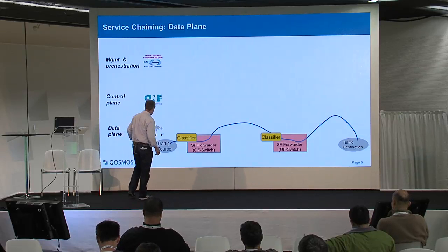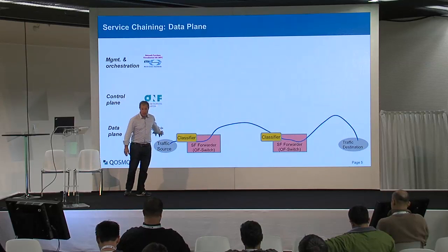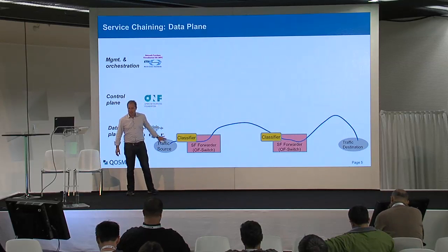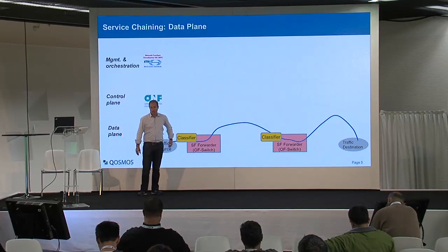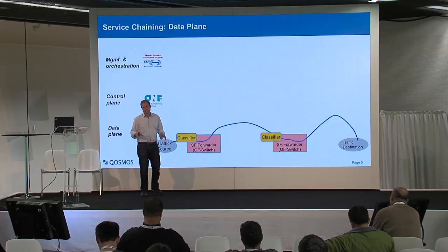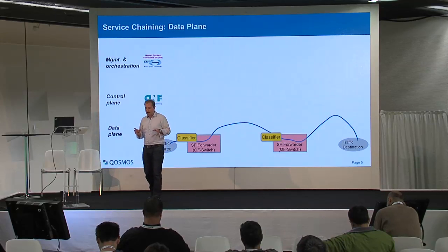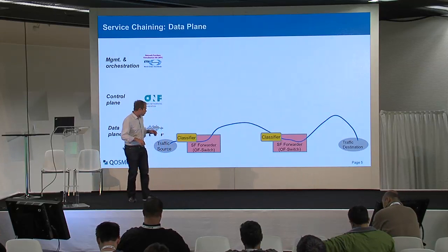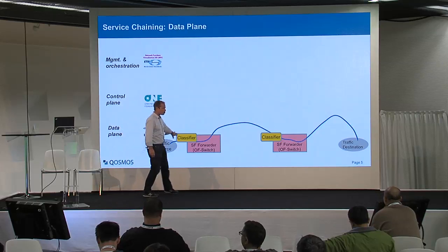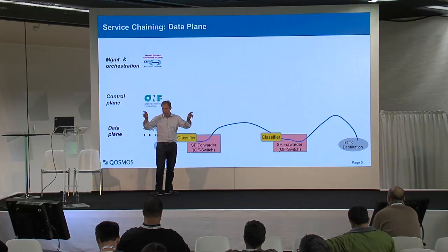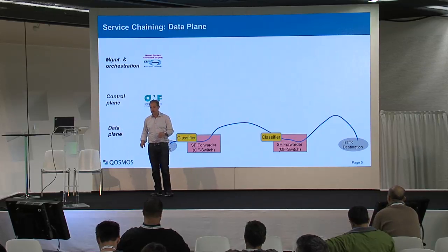At the IETF, there is this reference architecture where all packets have to go to what we call a classifier — also called a service classifier. The classifier is a network function that could be done in a virtual switch or could be a separate physical box.